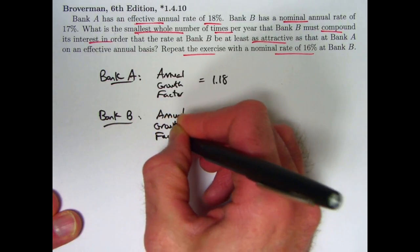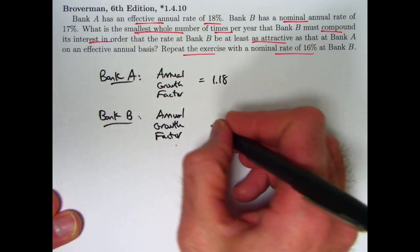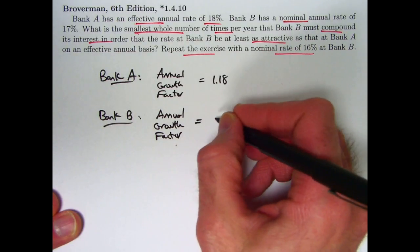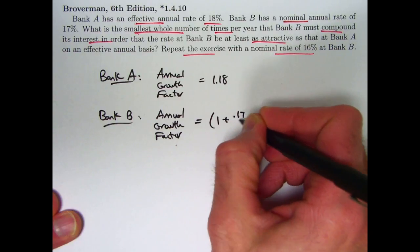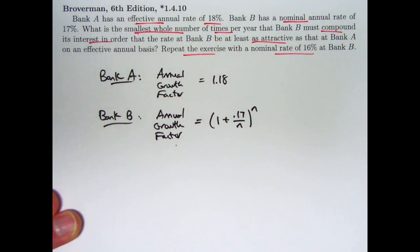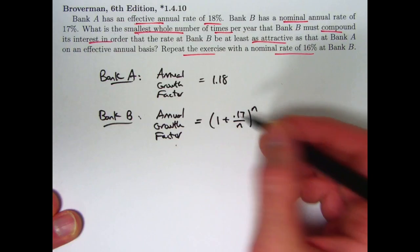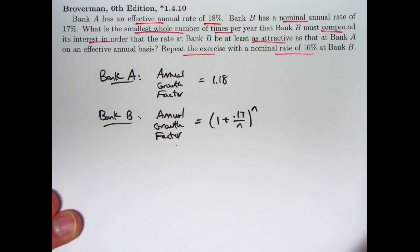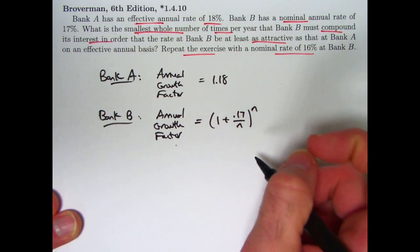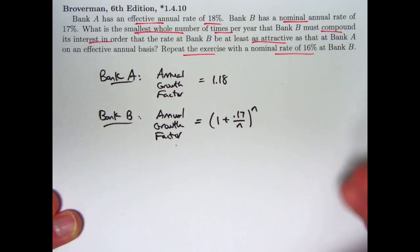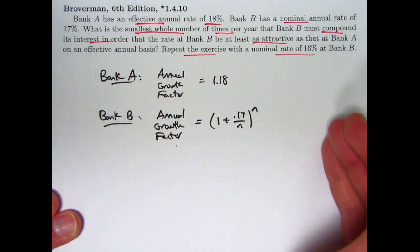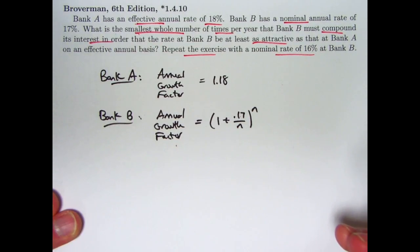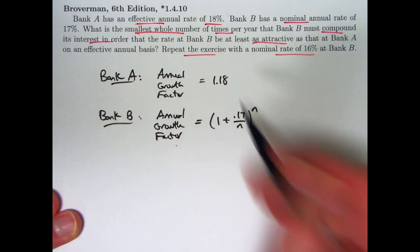Well, you can't write it as 1 plus I, where I is 0.17 here because you're compounding a certain number of times per year. You can write it like this, though, where N is the number of compounding periods. So the I here, if you will, 0.17 is a nominal interest rate in name only. Because you're compounding N times per year, 0.17 divided by N would be the interest per period, interest rate per period. You know, if N is 12, the period would be one month, for example. What we're wondering is, what is the smallest whole number value of N to make this greater than or equal to 1.18?